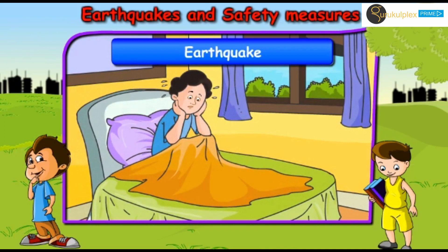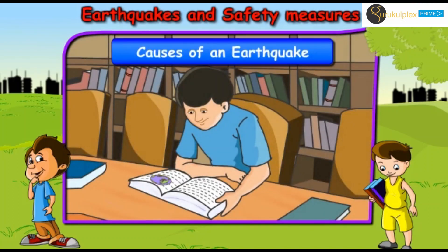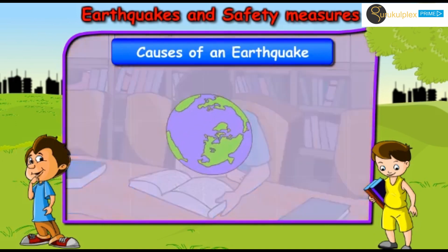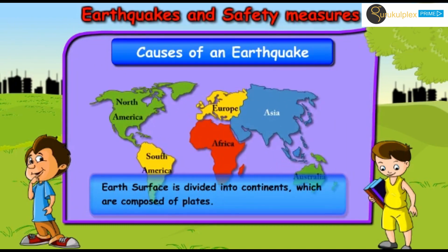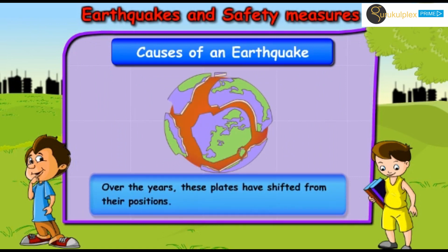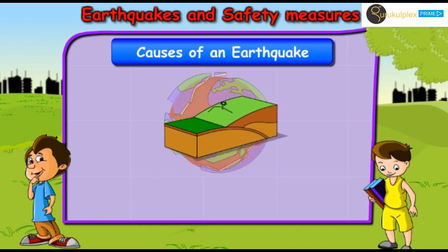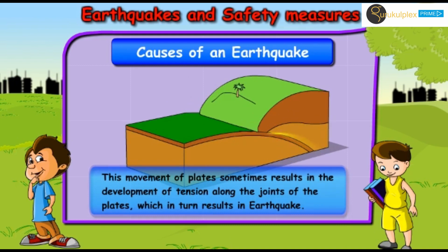Raju is thinking about and wants to study the causes of an earthquake. As you all know, Earth's surface is divided into continents, which are composed of plates. Over the years, these plates have shifted from their positions. This movement of plates sometimes results in the development of tension along the joints of the plates, which in turn results in earthquakes.